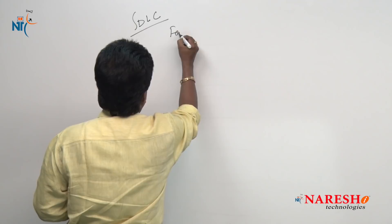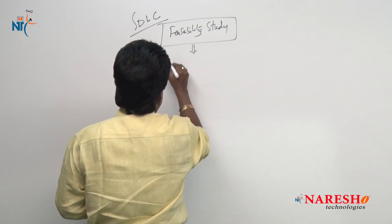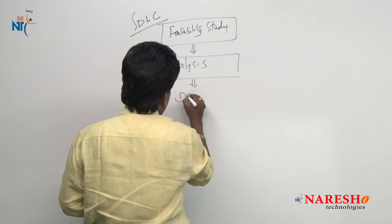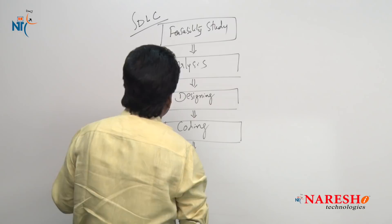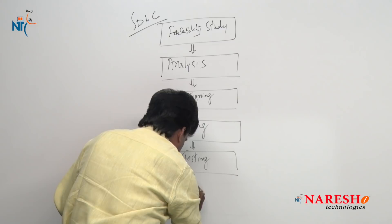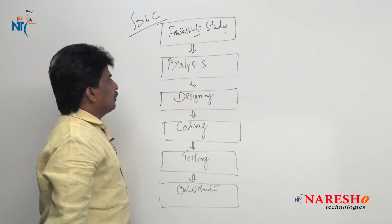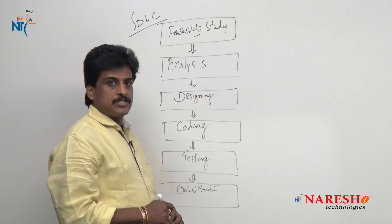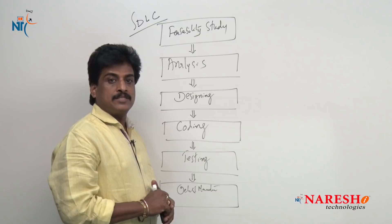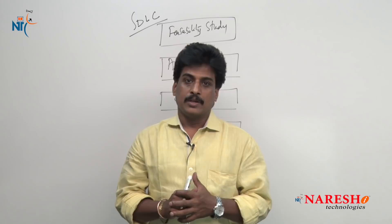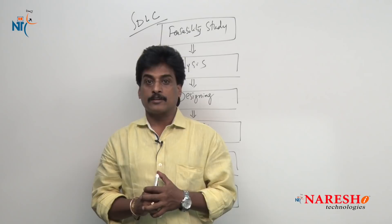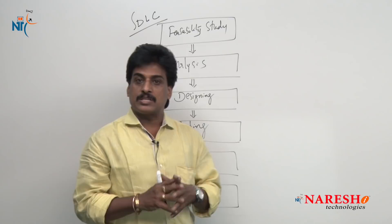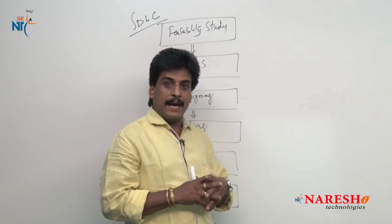The first phase is feasibility study, second is analysis, third is designing, fourth is coding, fifth is testing, and the last phase is delivery and maintenance. These are the six phases as per IEEE standard in the software industry. IEEE stands for the Institute of Electrical and Electronics Engineering — this organization provides standards for software documentation.